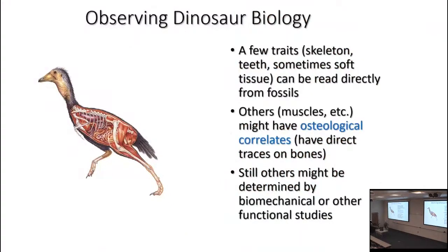How do we interpret dinosaur biology in general? There are a couple of different approaches. There are some aspects where we can see the direct evidence on the fossils — aspects of the skeleton, teeth, sometimes soft tissue. Other cases we can interpret soft tissue not because that tissue is preserved, but because it has osteological correlates — some feature in the bone that corresponds to those soft tissues — or aspects of the eye capsule or nose capsule, or muscle attachments.